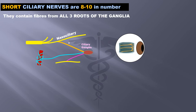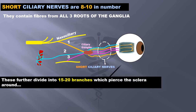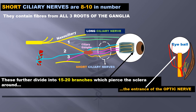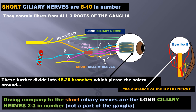The short ciliary nerves are 8 to 10 in number and contain fibers from all three roots of the ganglia. They further divide into 15 to 20 branches, which pierce the sclera around the entrance of the optic nerve.